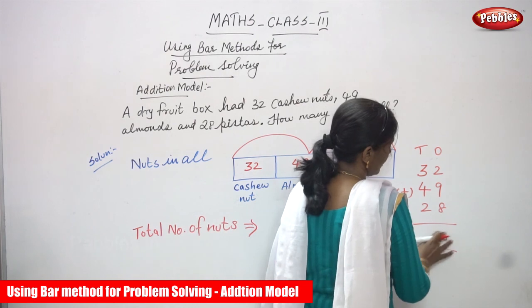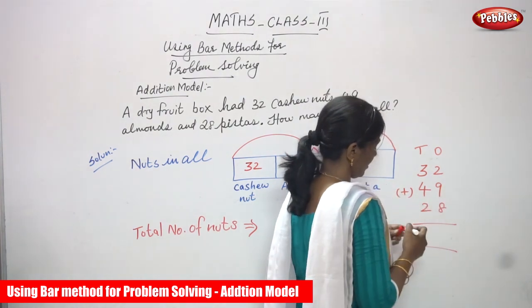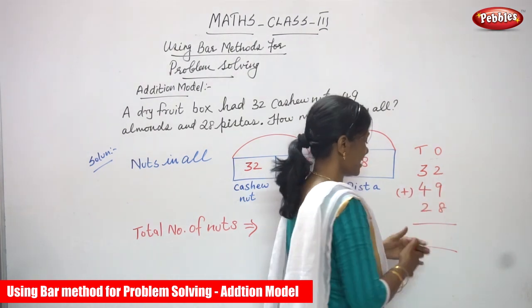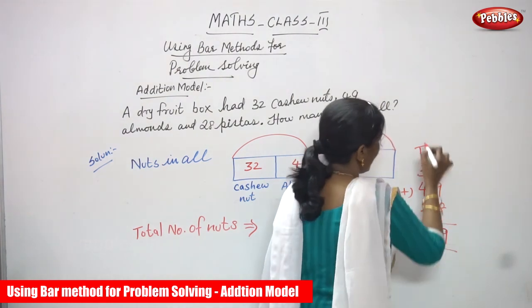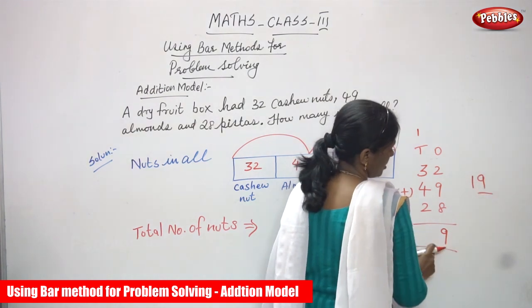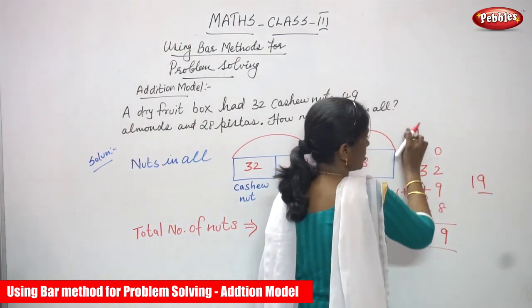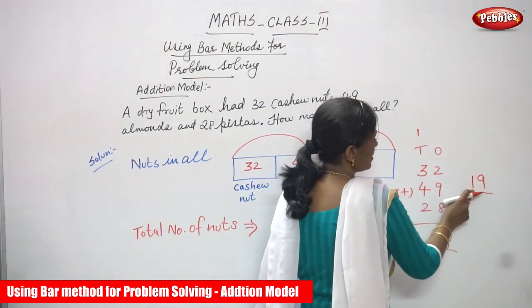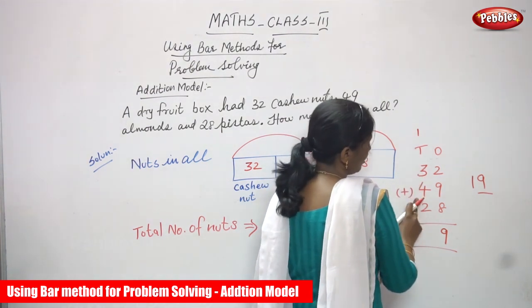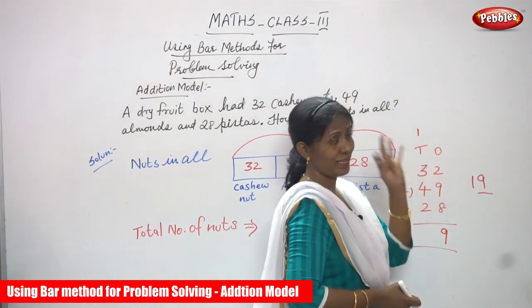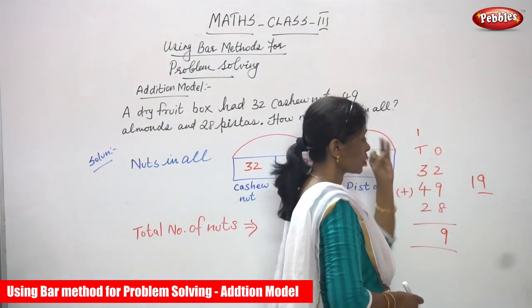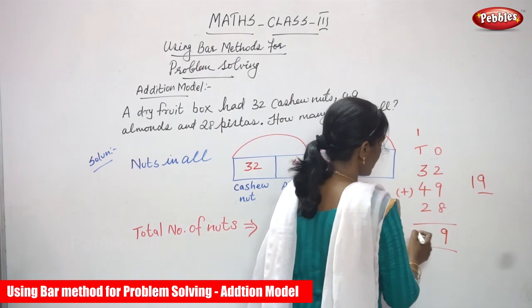So 11 in the mind and 8 on the fingers: after 11 — 12, 13, 14, 15, 16, 17, 18, 19. The result is 19. So I write 9 in the ones place. The 1 means one ten, which is the carry over. This carry over goes to the tens place. 1 plus 3 is 4, then 4 plus 4 is 8, then 8 plus 2 is 10.